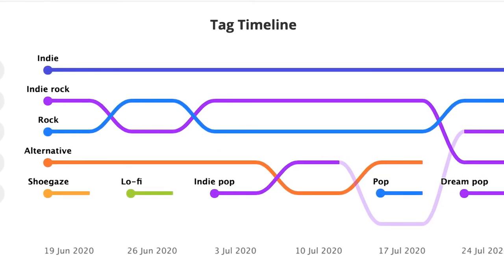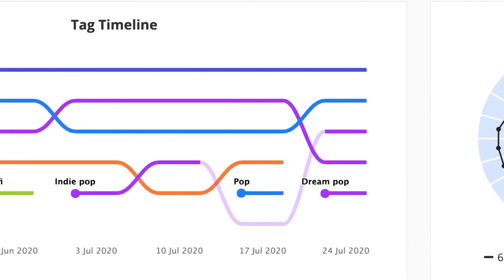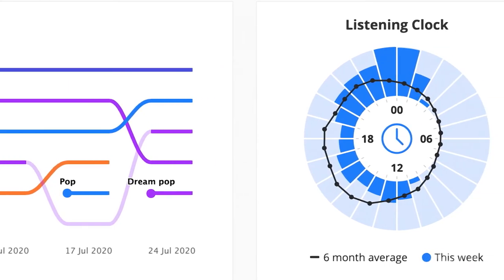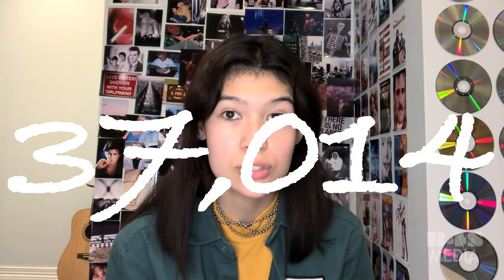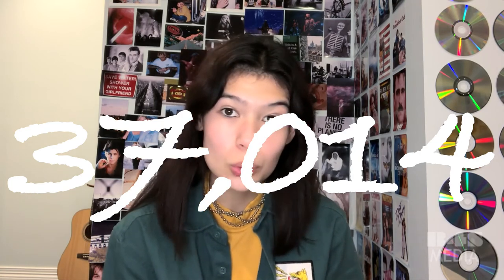In your weekly reports it gives you your tags — mine are usually indie, alternative, shoegaze, and dream pop. It tells you how long you've listened and compares you to your friends, which I love. I've been scrobbling on Last.fm since November 2018 and I have 37,014 scrobbles at this point — pretty big number. This year alone I have around 14,000 scrobbles, so I've listened to 14,000 songs. In hindsight, that is not that much.